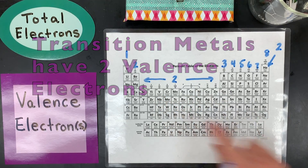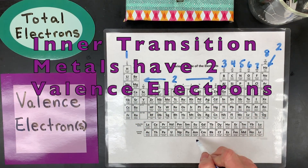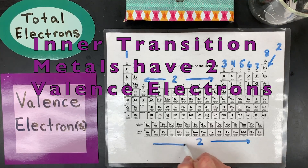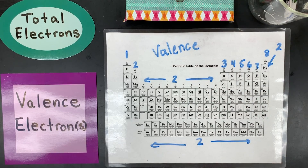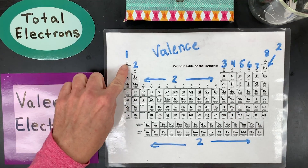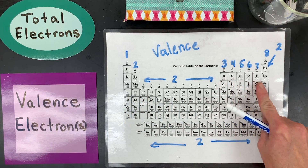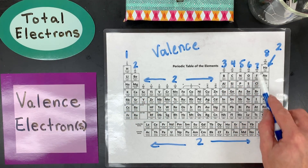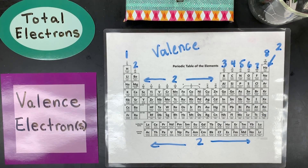To understand why transition metals have two valence, you need to know electron configuration. The inner transition metals are the same — all of them have two valence. So that's the first trick: there's a pattern on the periodic table. To know why that pattern exists you need to know how to write electron configurations, but if you don't have to worry about that, this is the fastest way. One and two across the s-block, all two across the transition metals, three through eight down the p-block columns, then helium has two, and inner transition metals are all two.